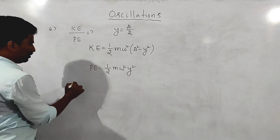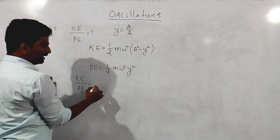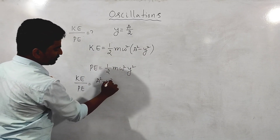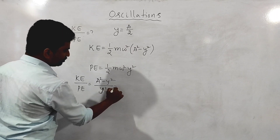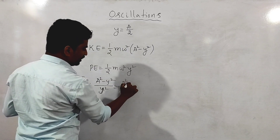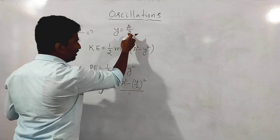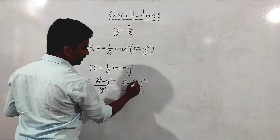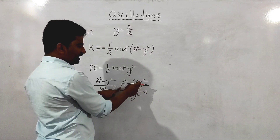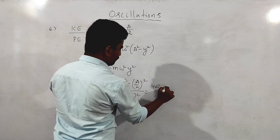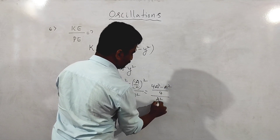The ratio of kinetic energy to potential energy — half m omega squared gets cancelled — so it equals a squared minus y squared divided by y squared. Substituting y equals A/2: a squared minus (A/2) squared divided by (A/2) squared gives 4a squared minus a squared divided by 4, divided by a squared divided by 4. The 4s cancel.